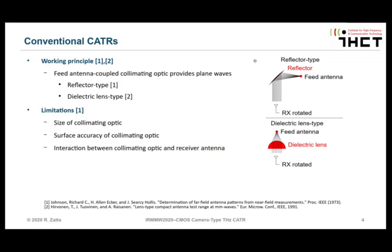There are some limitations, of course. The size of the collimating optic, and the surface accuracy of the collimating optic — it is quite hard to fabricate a reflector or a lens with sufficient surface accuracy. Because if the surface is too rough, then the rays are distorted and the amplitude profile is also distorted. And there is also a limitation of interaction between the collimating optic and receiver antenna related to standing waves, and you need to make sure that the impact of standing waves is reduced.